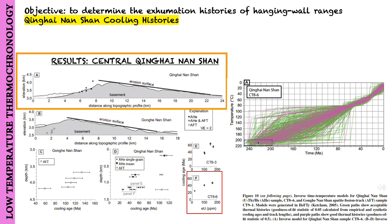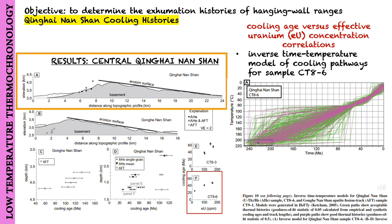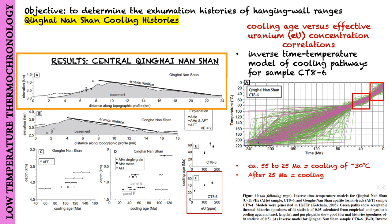They also constructed an inverse time-temperature model of cooling pathways for sample CT-86. The model shows a relatively narrow range of permissible time-temperature histories from around 55 to 25 million years ago, involving cooling of perhaps 30 degrees Celsius and no more through this interval. Although the model permits accelerated cooling after around 25 million years ago, the timing is too poorly constrained to confirm this.